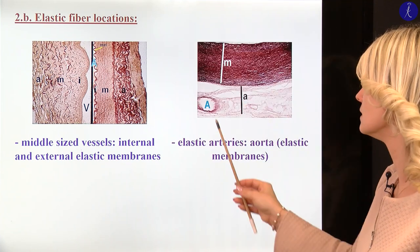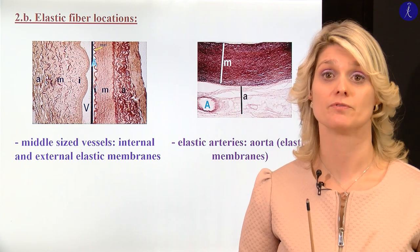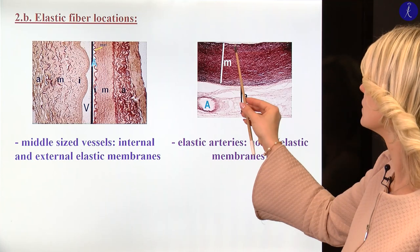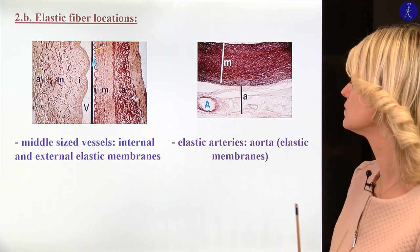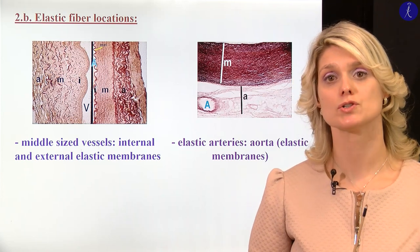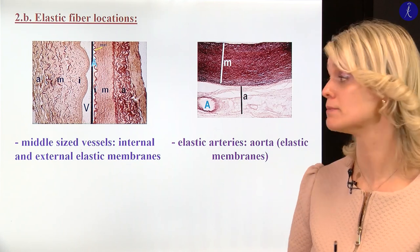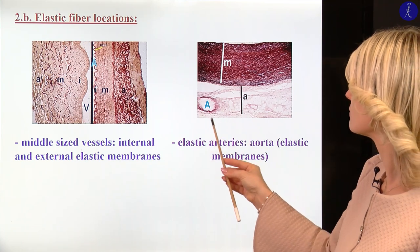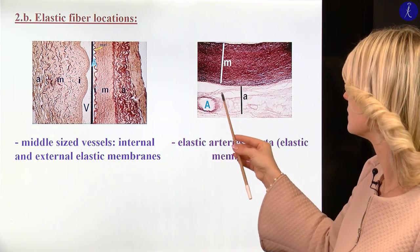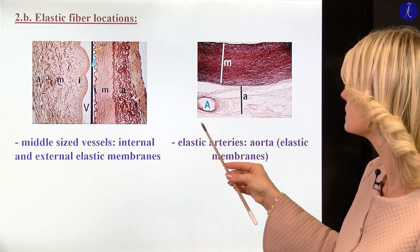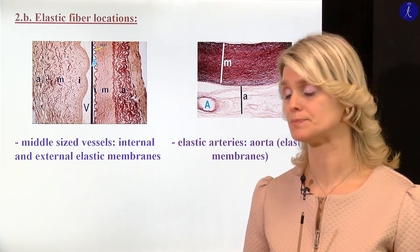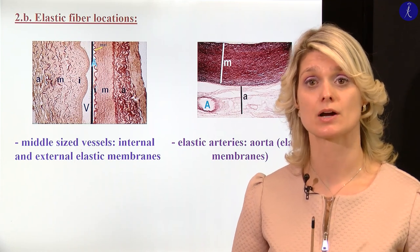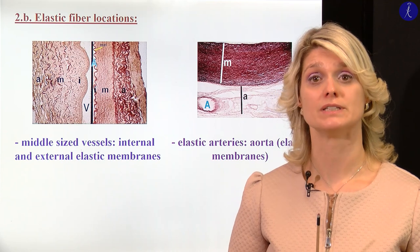The other vessel is the elastic artery — for example, the aorta and some bigger branches of the aorta — where in the tunica media, between the smooth muscle cells, we have a lot of elastic membranes formed by elastic fibers. That is what we can see with orcein staining too. It is really special that in the wall of the aorta, the smooth muscle cells are also involved in the formation of the elastic fibers.